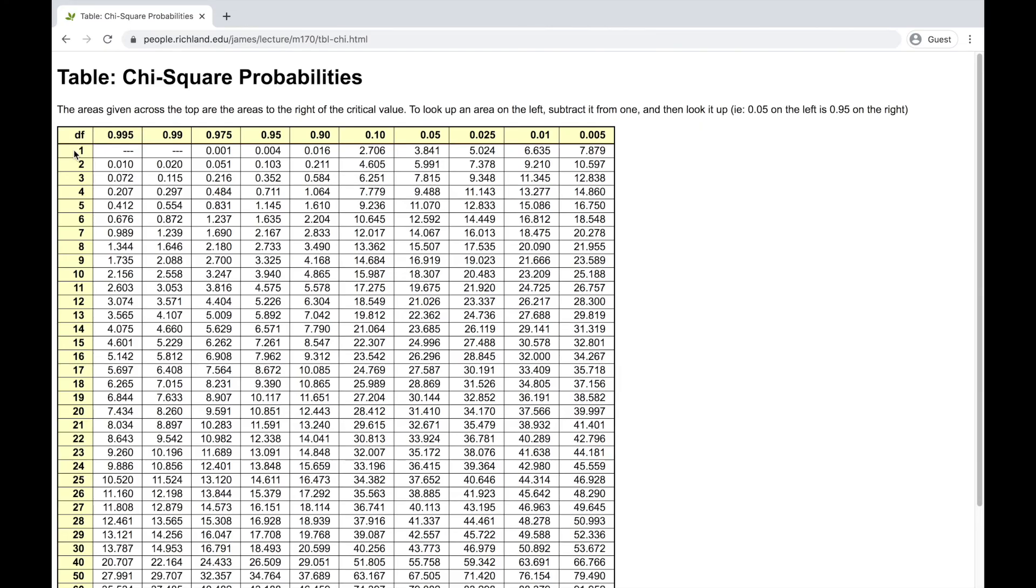Here I have a chi-squared table. Yours may look a little bit different, but they should overall be approximately the same. We had one degree of freedom, so we're going to consider this first row right here. And we move along to find 12.7, we move along to find our test statistic of 12.7. We can see it's nowhere along this row. The largest number we have is 7.879.